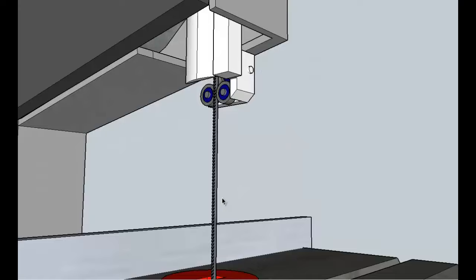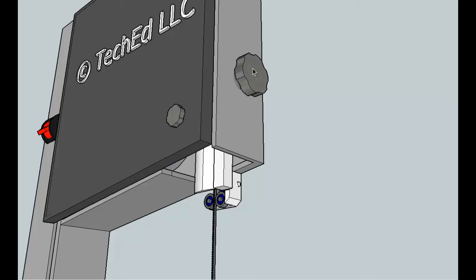There is a knob in the center here on the side, and this allows the guard to go up and down. You want this guard to be about an eighth to a quarter of an inch above the work.